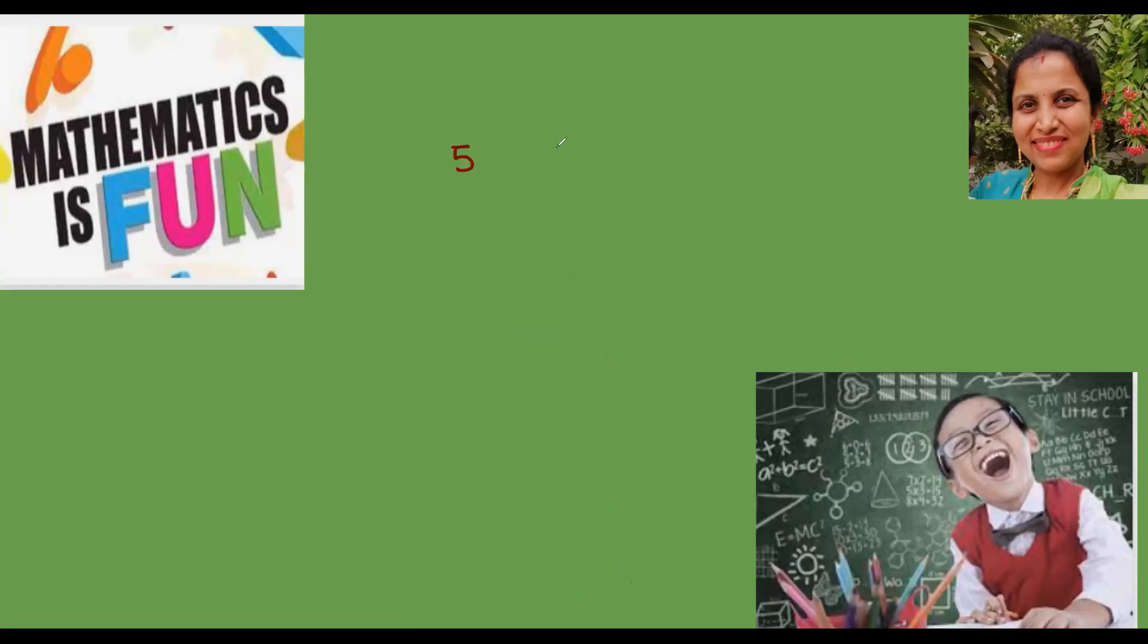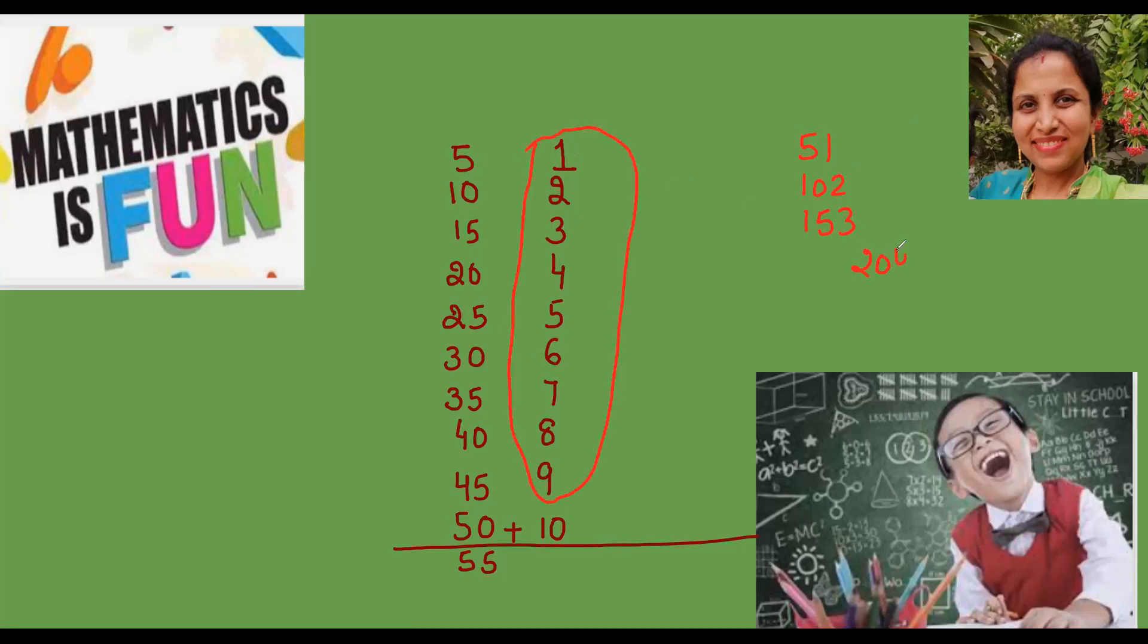You can do any number. Let's try for 51. Write the five table: five, 10, 15, 20, 25, 30, 35, 40, 45, 50. You can go till 50 or you can go ahead also. Here now you write the one table: one, two, three, four, five, six, seven, eight, nine, 10. Here it will be added. You don't need to do anything, you get the answer straightforward: 51, 102. Because here are single digit numbers till here, we're getting our answer directly: 153, 204, 255, 306, 357, 408, 459, and 510.